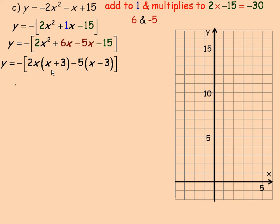And so we can now finish factoring. We have the negative here. The x plus 3 factors out. And what's left then, the other factor is 2x minus 5.